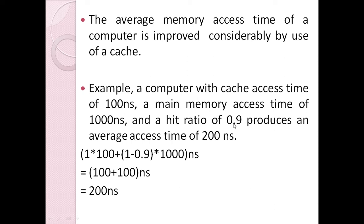With a hit ratio of 0.9, that means 90% of cases result in a hit and 10% result in a miss. All requests go to cache memory first, so the cache time component is 1 × 100 nanoseconds. The requests not satisfied in cache — that is, (1 − 0.9) = 0.1 — go to main memory, contributing 0.1 × 2000 nanoseconds. Solving this gives an average access time of approximately 200 nanoseconds, which is much closer to cache speed than main memory speed, due to the high hit ratio.